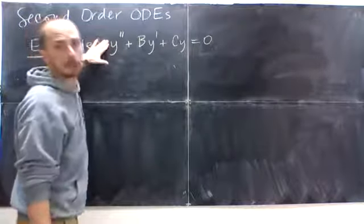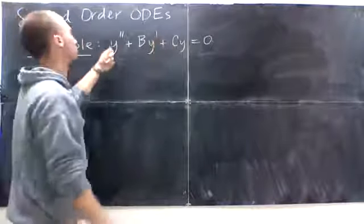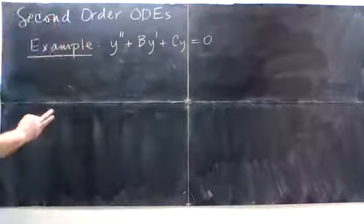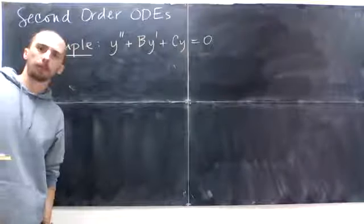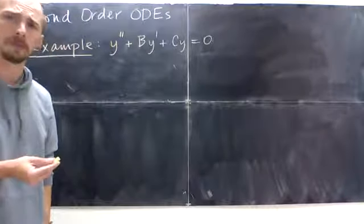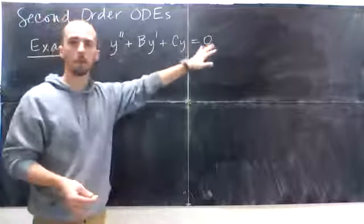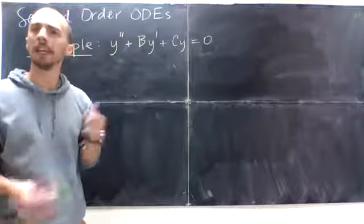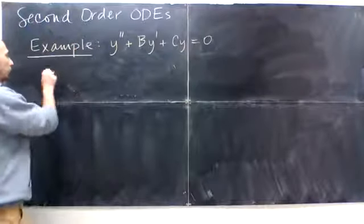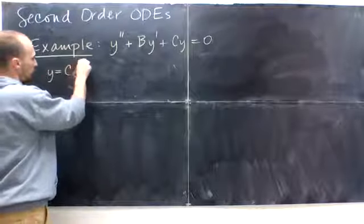I'm going to move towards the general situation here where we have constant coefficients of y double prime, y prime, and y. I'm assuming that if this was not 1, that I would divide everything through by that number and that could make that 1. And that would not change to the other side because it's a 0.